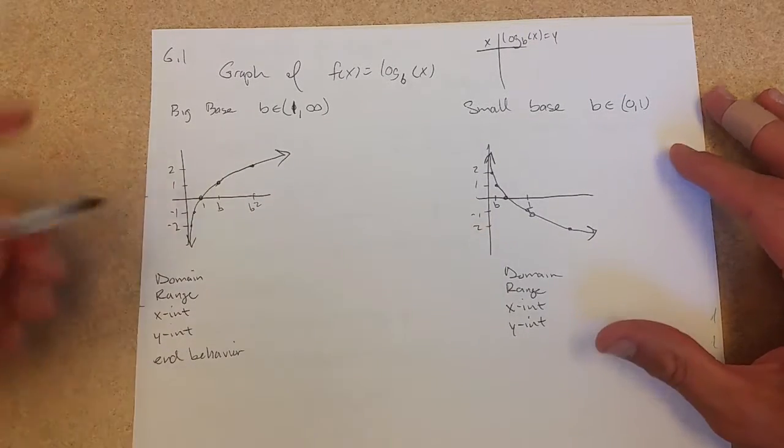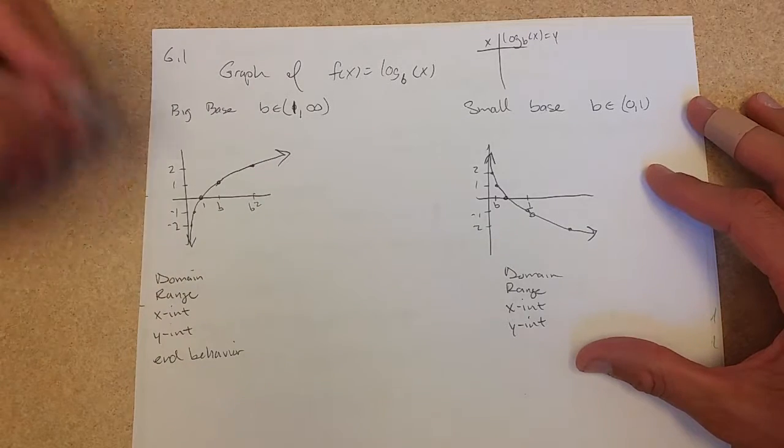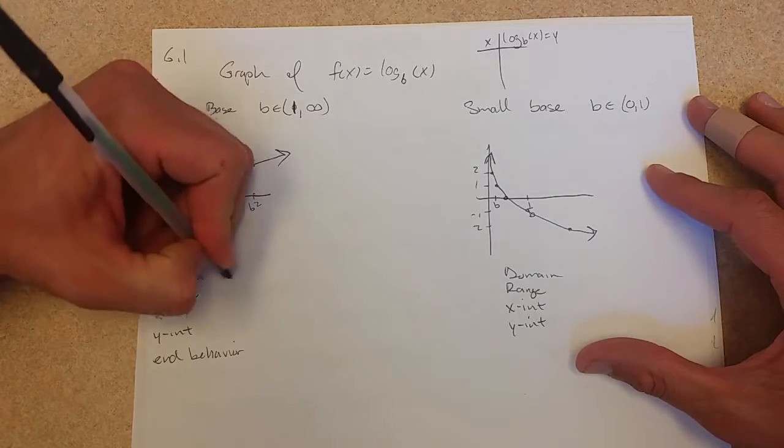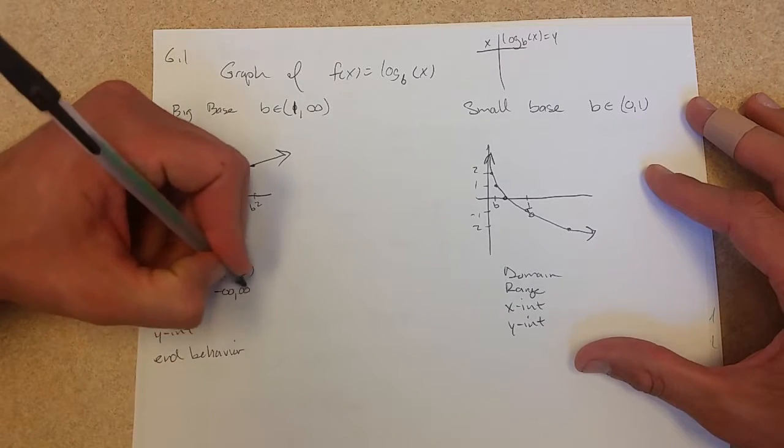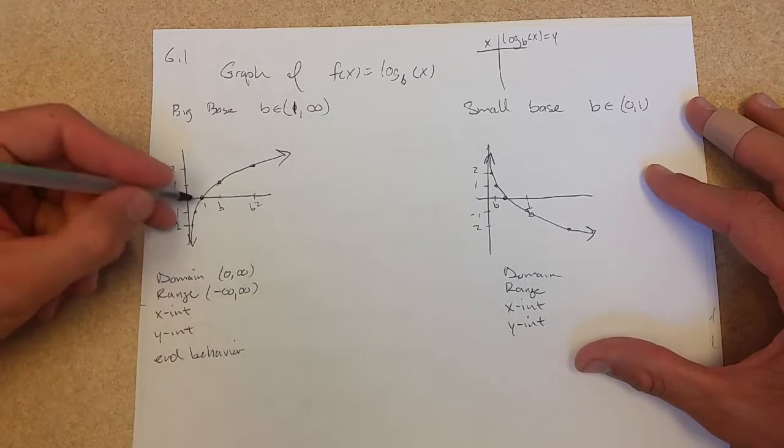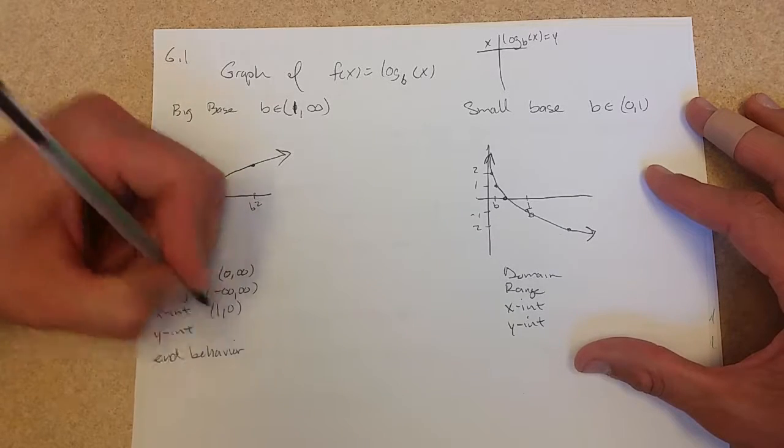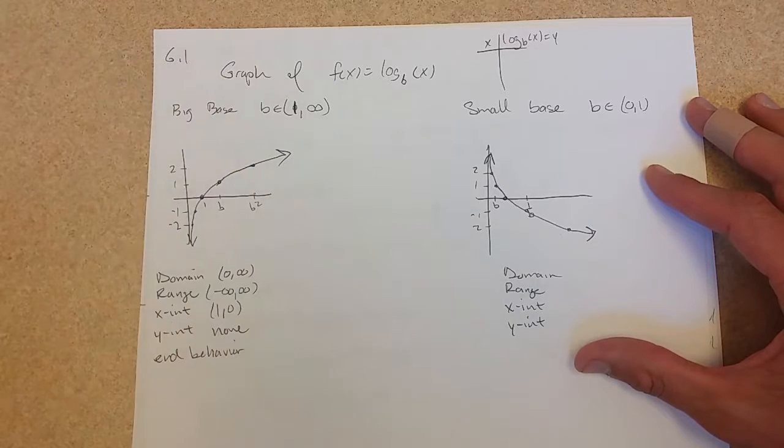So our domain, not a full domain, zero to infinity. Range, full range. X-intercept one, zero. Y-intercept none, and behavior.